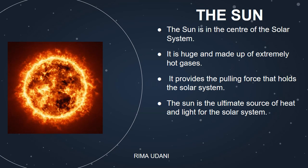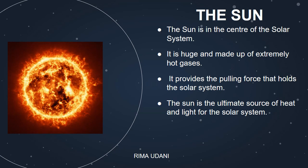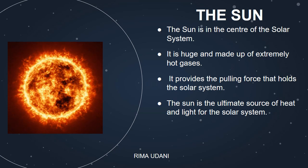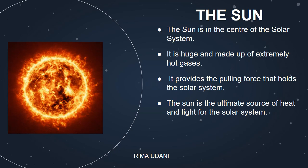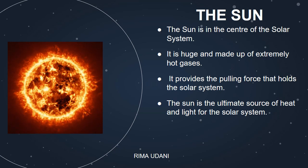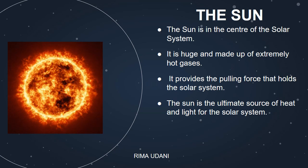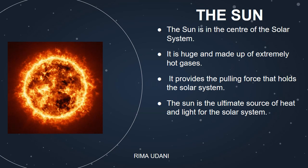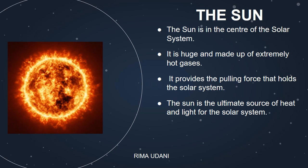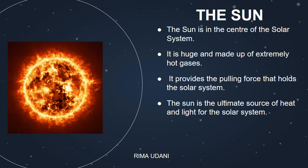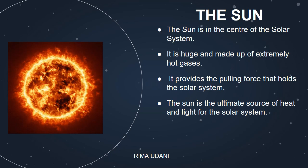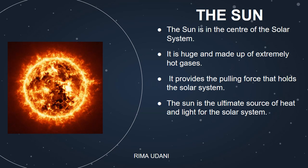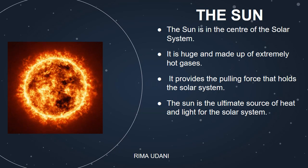Now let's learn about the Sun. The Sun is the center of the solar system. It is huge and made up of extremely hot gases. It provides the pulling force that holds the solar system. The Sun is the ultimate source of heat for the entire solar system, but that tremendous heat is not felt so much by us because despite being our nearest star, it is still far away — about 150 million kilometers from the Earth. Light travels at the speed of about three lakh kilometers per second, yet even at this speed, the light of the Sun takes about eight minutes to reach the Earth.